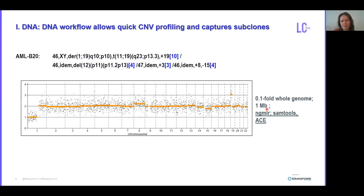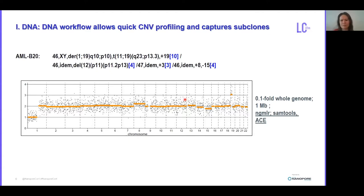If you sequence the genome at just 0.1-fold coverage — 30 times less than the previous slide — you can already detect gain of chromosome 19 in the main clone, but the profile is quite noisy and you do not detect the subclonal aberrations. Increasing the coverage — especially look at chromosome 12 — you do not see anything at that level.